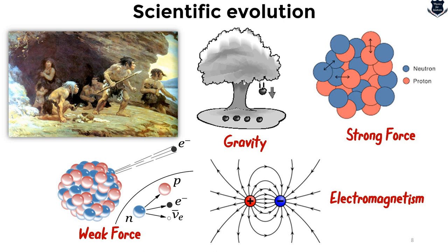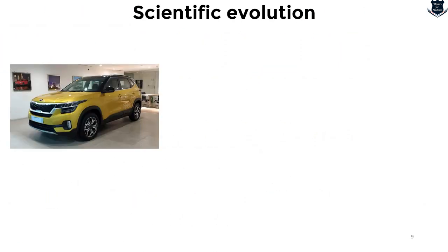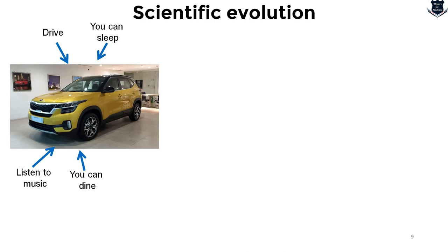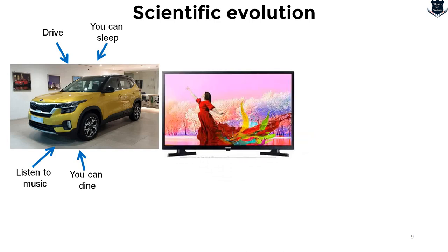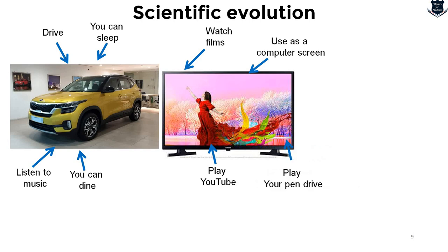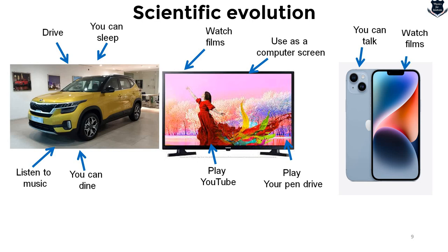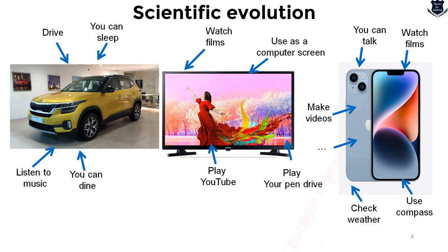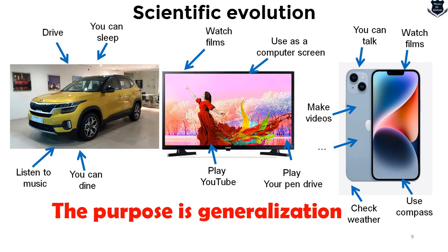What we are trying to show is that generalization is the purpose — putting everything under one roof and getting the maximum out of a device. If I take a modern car, it serves many purposes beyond driving. A smart television can function as a computer screen, play YouTube videos, and accept flash drives. A modern mobile lets you watch films, use a compass, check the weather, and make videos. This purpose of generalization is something which revolutionized our understanding of physics and mathematics.